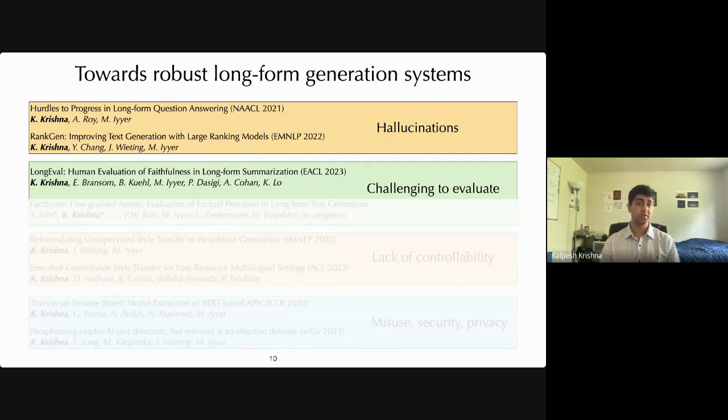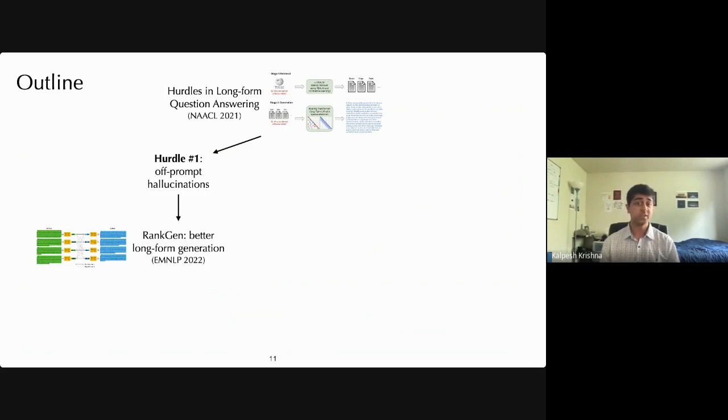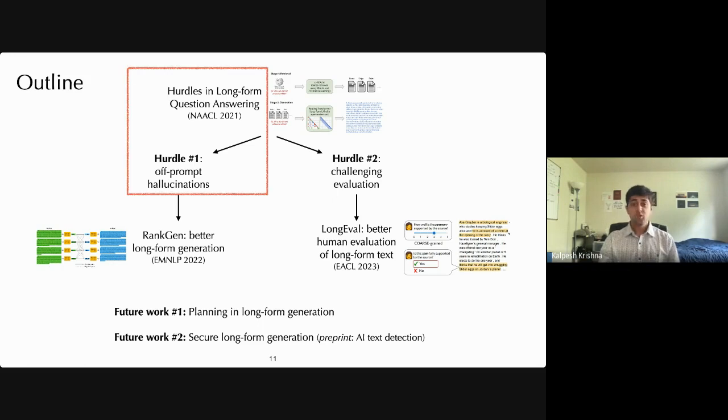My research has broadly focused on these four issues in current text generation systems. In my research, I have focused on empirically identifying these issues in current models, as well as building new algorithms and techniques to help us make progress towards these issues. In this talk, I will primarily focus on three of these papers. I will first describe a system that we built for long-form question answering, which achieved a state-of-the-art performance on the official leaderboard at that time. However, despite this excellent performance, a careful empirical analysis of system outputs will reveal several issues related to the model as well as evaluation. The first issue that we will observe is that of off-prompt hallucinations. I will then use that to describe our algorithm RankGen, which is an attempt towards addressing this issue in long-form text generation. Next, I will discuss issues in both automatic and human evaluation of long-form text generation. And I will use that to then describe the long-eval guidelines, which are three simple empirically motivated ways to improve the quality of human annotations. And finally, I will conclude with two future directions that I'm really excited about related to planning in long-form text generation, as well as secure long-form text generation.